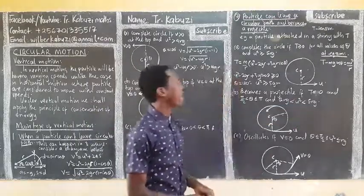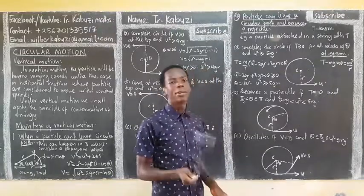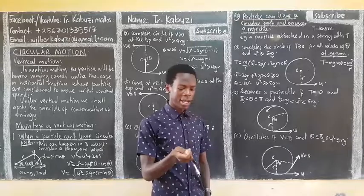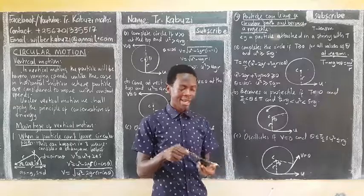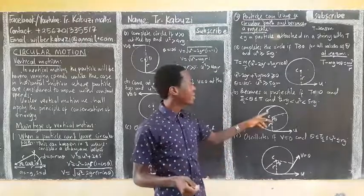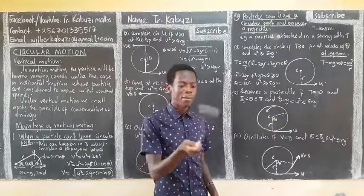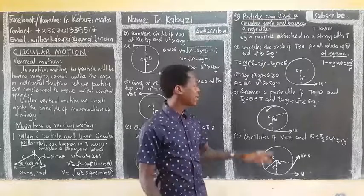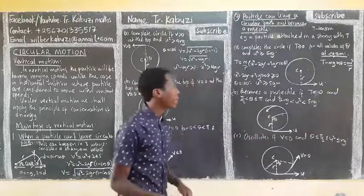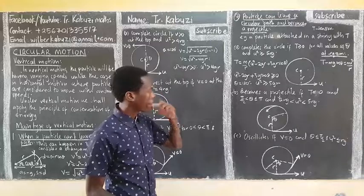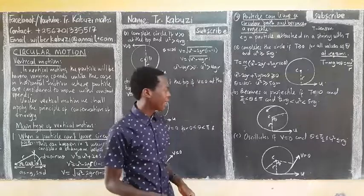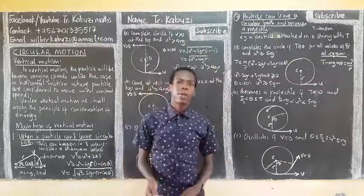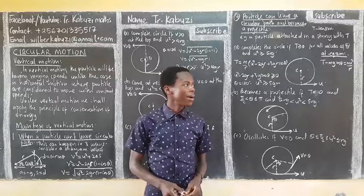The particle becomes a projectile when tension equals zero. When we are swinging the particle and the tension in the string vanishes, there is no longer any stretch — the particle falls off and follows projectile motion. If V equals zero for some angle between 0 and 180°, the particle oscillates instead. The next lesson will cover what happens when the particle is at the top and at the bottom of the circular path.